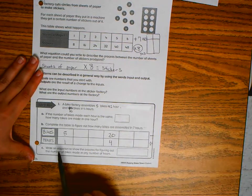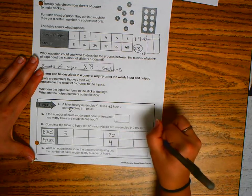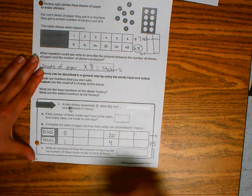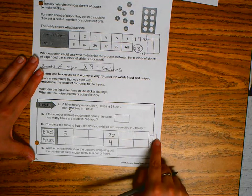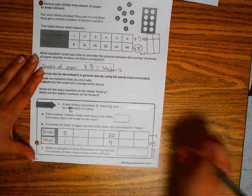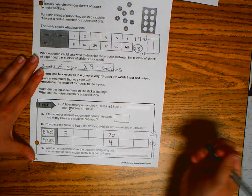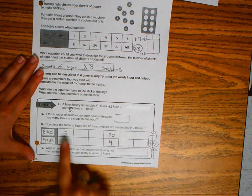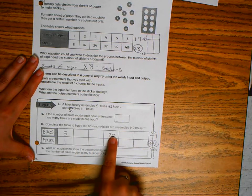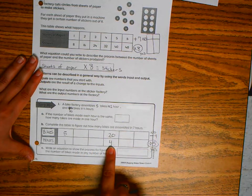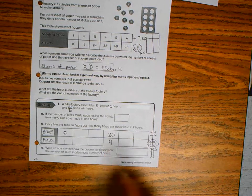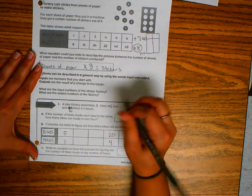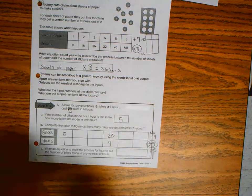In this case five minus four is one and five divided by five is one. But twenty minus four is not four, so I'm not subtracting. I must be dividing. Five divided by five is one, twenty divided by five is four. So I know that the bikes for each hour is five.